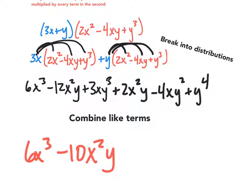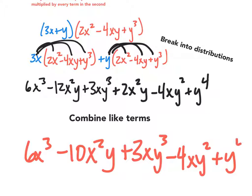3xy cubed - there's nothing else that has an xy cubed, so plus 3xy cubed. And then minus 4xy squared - there's nothing else with an xy squared. And finally, y to the fourth is also sitting by itself. And there we have it.